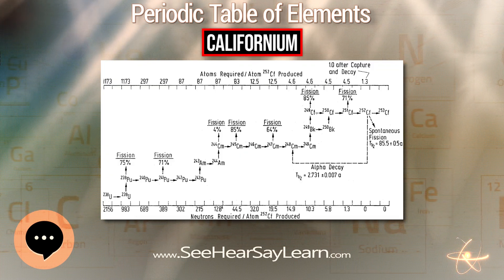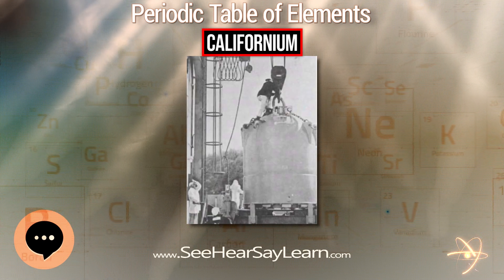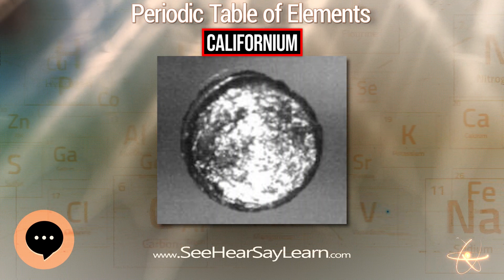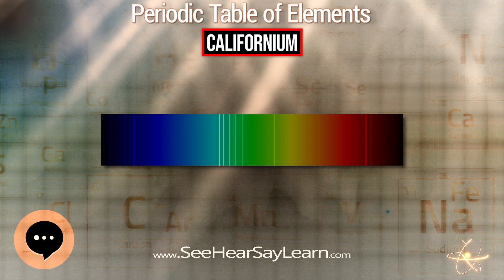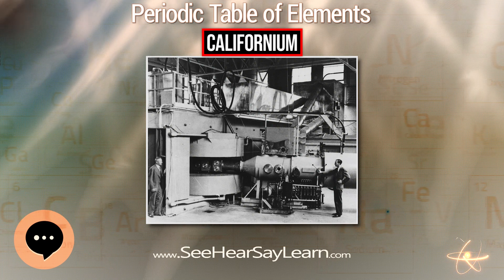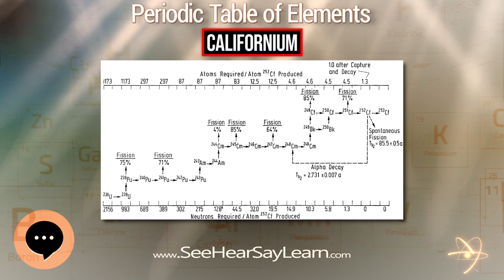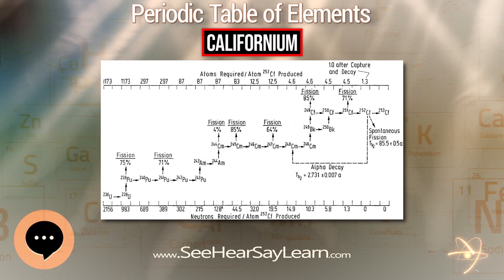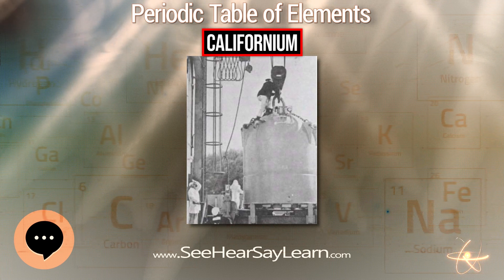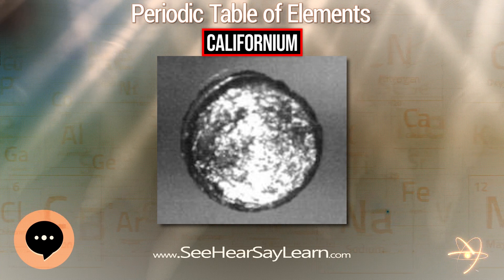The High Flux Isotope Reactor at the Oak Ridge National Laboratory in Tennessee started producing small batches of californium in the 1960s. By 1995, the HFIR nominally produced 500 milligrams of californium annually. The Atomic Energy Commission sold californium-252 to industrial and academic customers in the early 1970s for 10 dollars per microgram, and an average of 150 mg of californium-252 were shipped each year from 1970 to 1990.